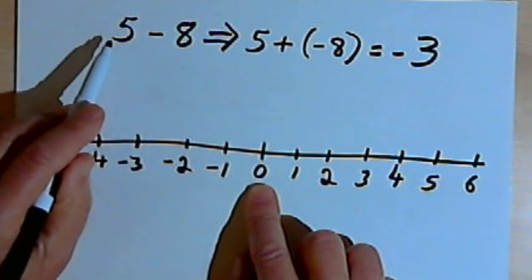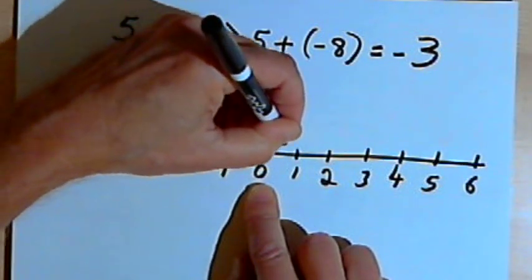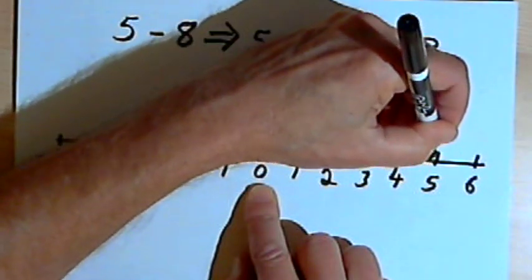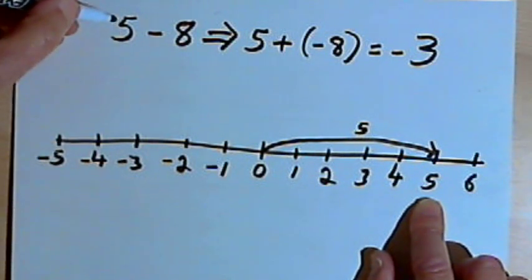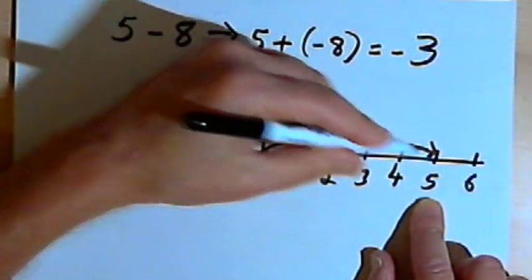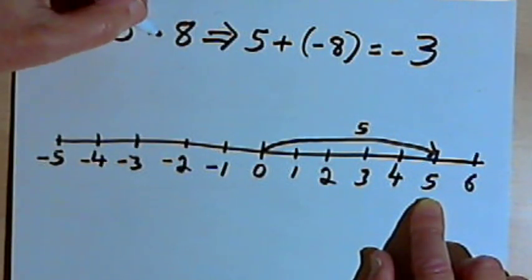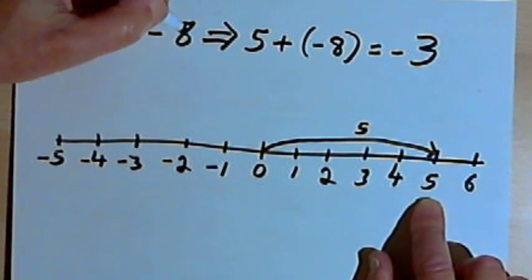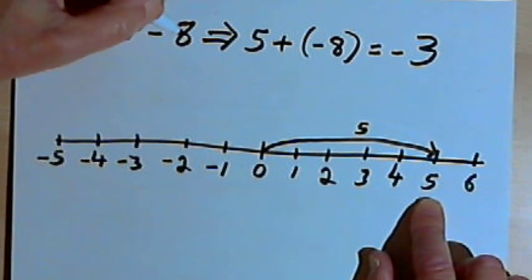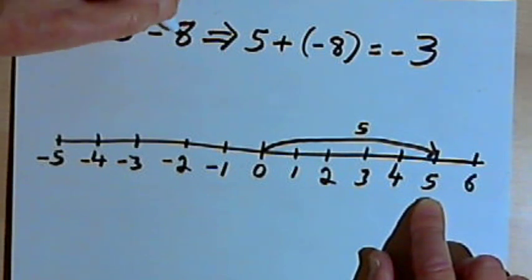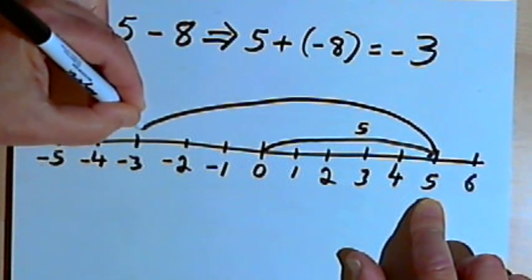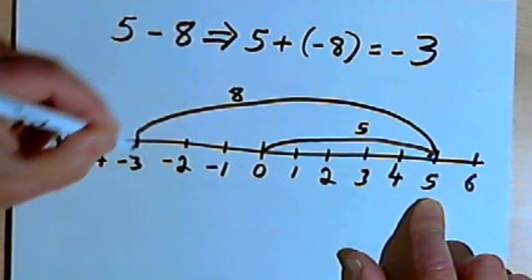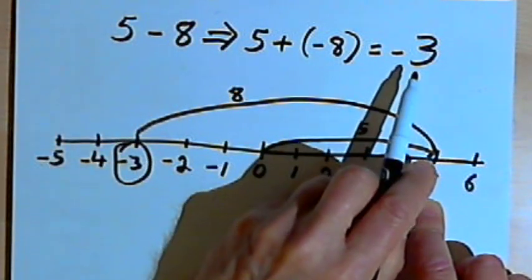Starting from 0, I've got 5 minus 8. So I want to move from 0, five units to the right, up to the number 5 — because the 5 was a positive number, I move to the right. Now I want to subtract 8. Well, 8 is also a positive number, but when I subtract, that means I'm going to take whatever direction I would normally go and go in the opposite direction. So I move 8 units to the left from the 5, and that gets me to negative 3 — the same number I got by doing this mathematically.